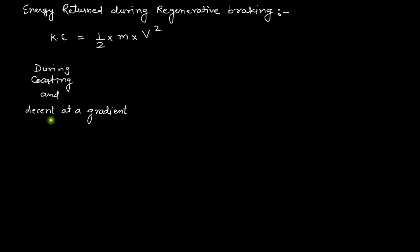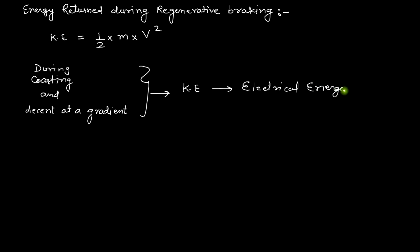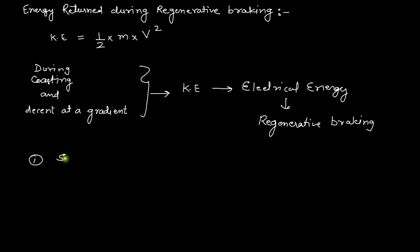During coasting and descent at a gradient, the locomotive will have stored kinetic energy. This kinetic energy can be converted into electrical energy and returned to the system using regenerative braking. The energy generated during regeneration depends upon some factors, like the speed changes — that is, the change in speed taking place during the regenerative period.